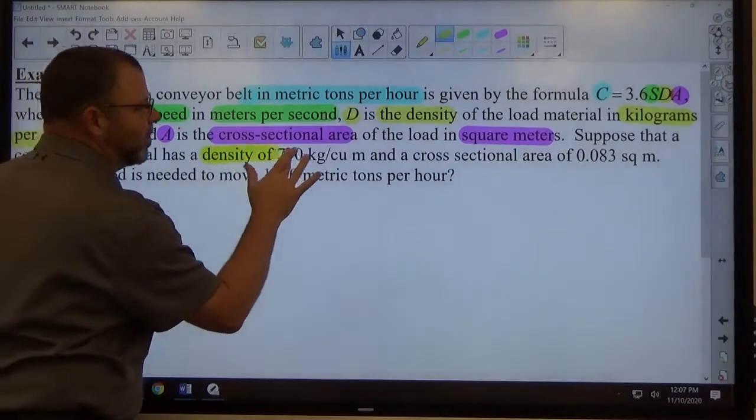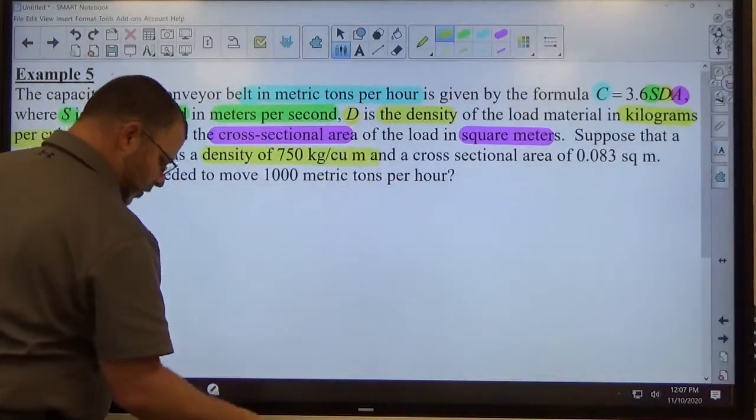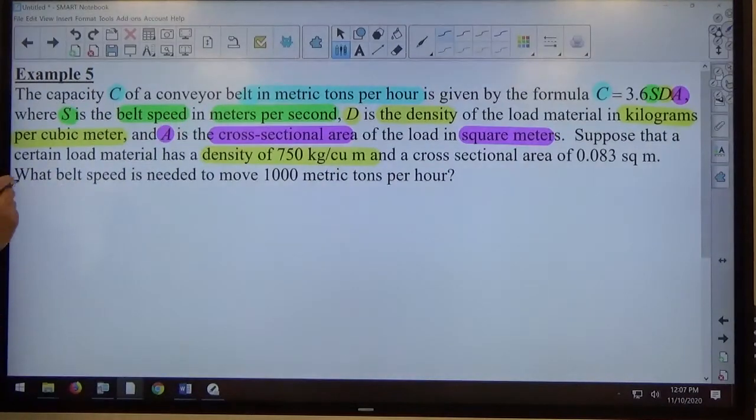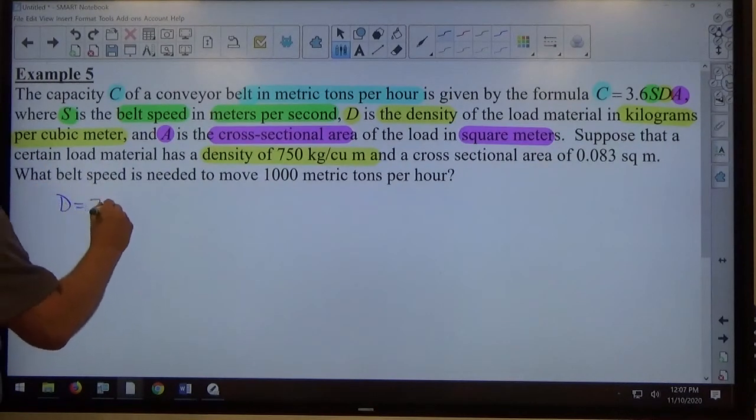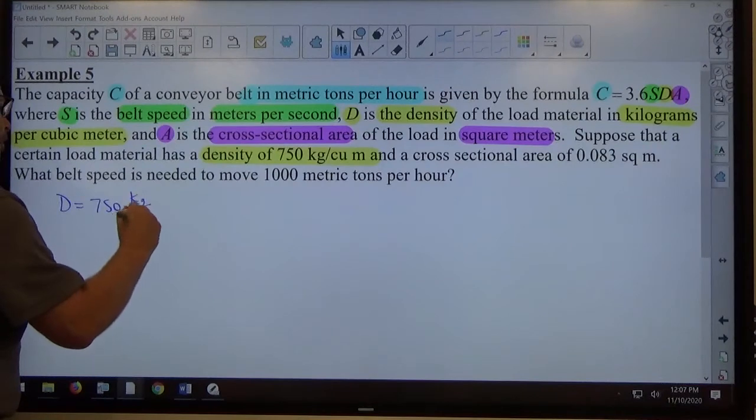But again, it says has a density of this. So if I'm writing down stuff I know as I know it, density, I'm going to use a capital D, capital D equals 750 kilograms per cubic meter.